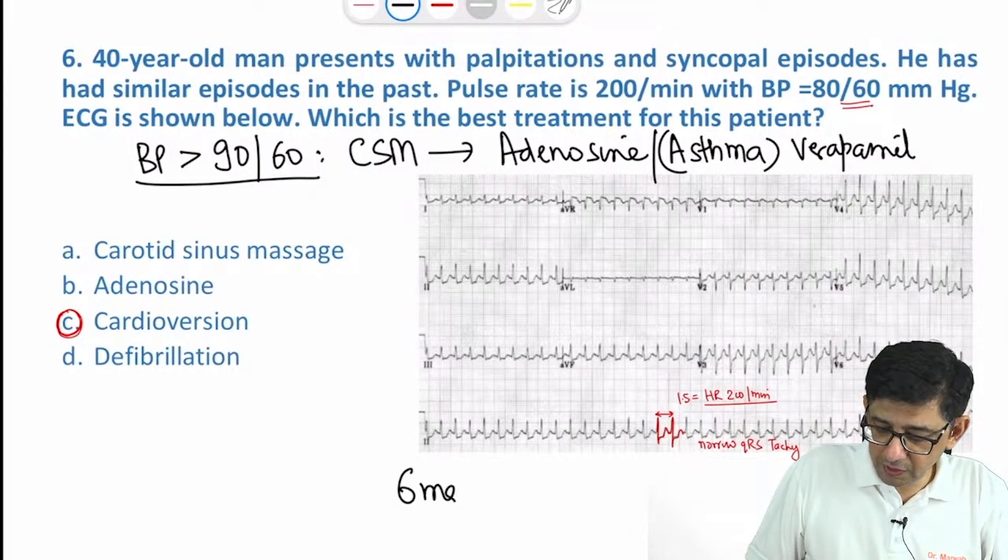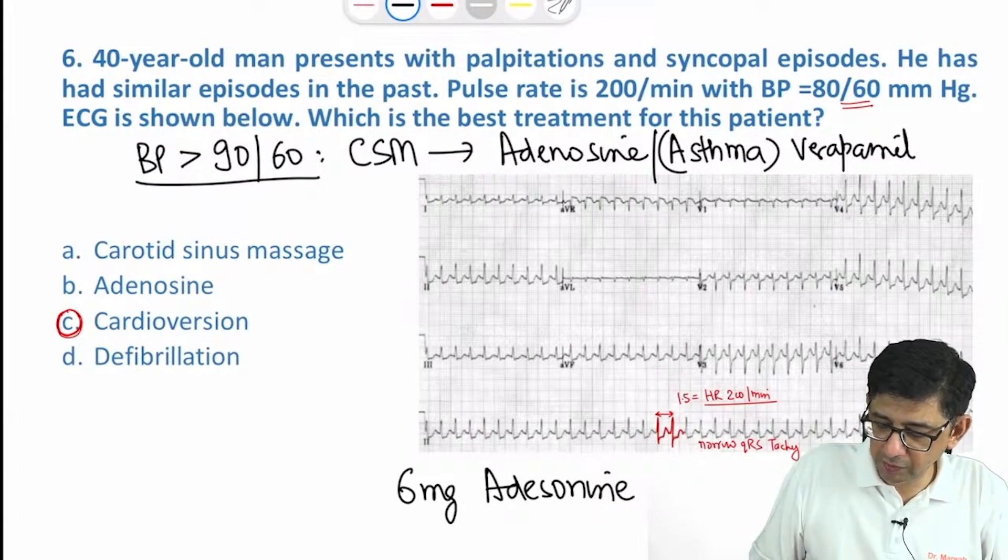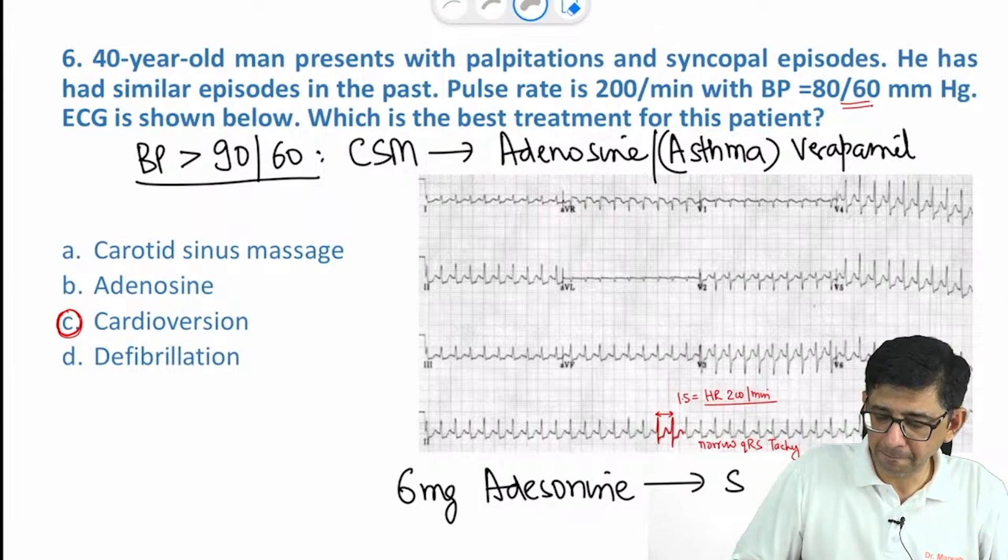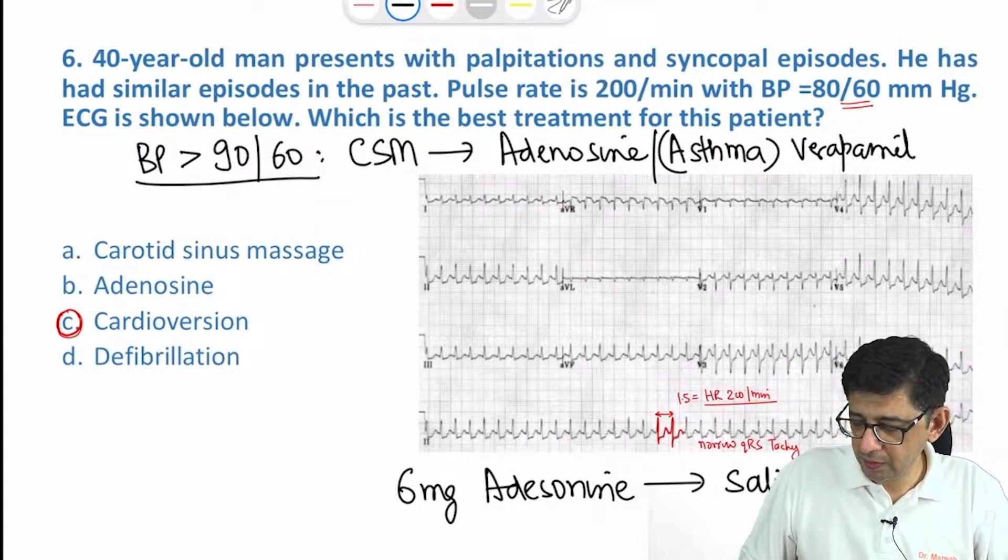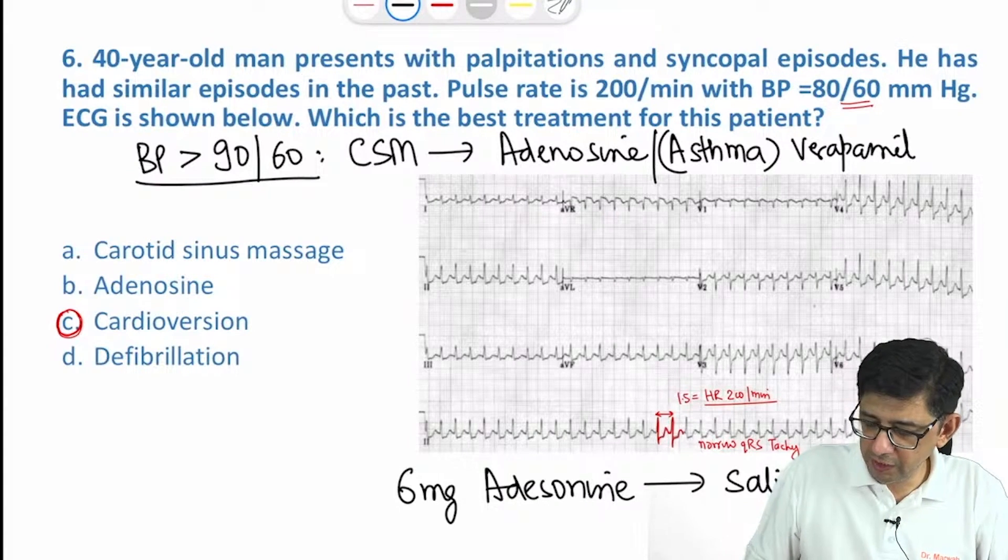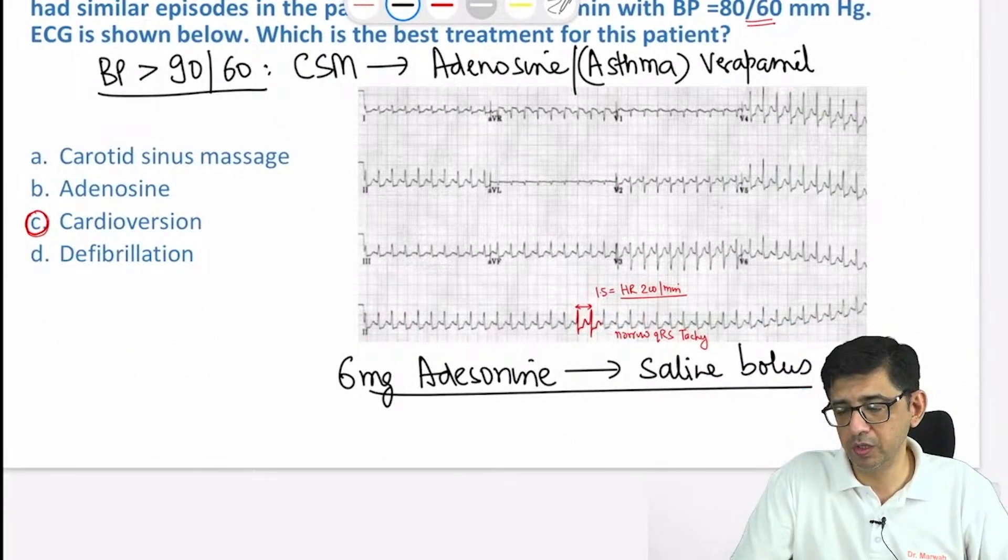We give 6 mg adenosine as a short bolus. When you give adenosine, it must always be followed by a saline bolus. After adenosine, a 20 ml saline bolus should be given because otherwise it will remain in the IV line only.